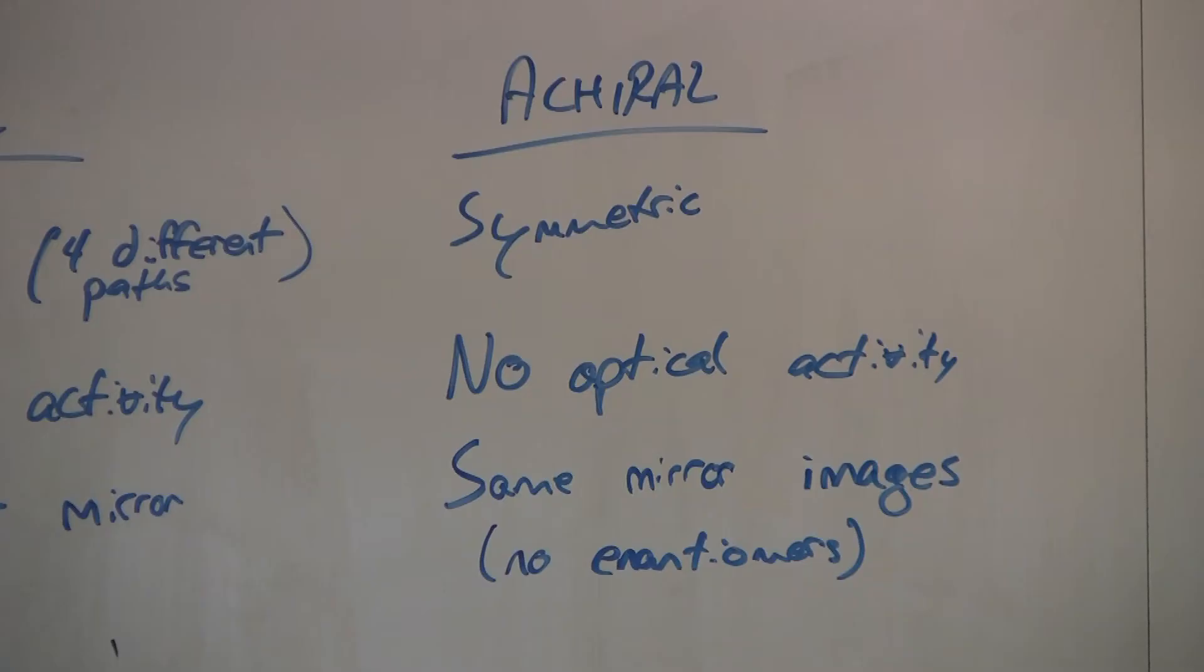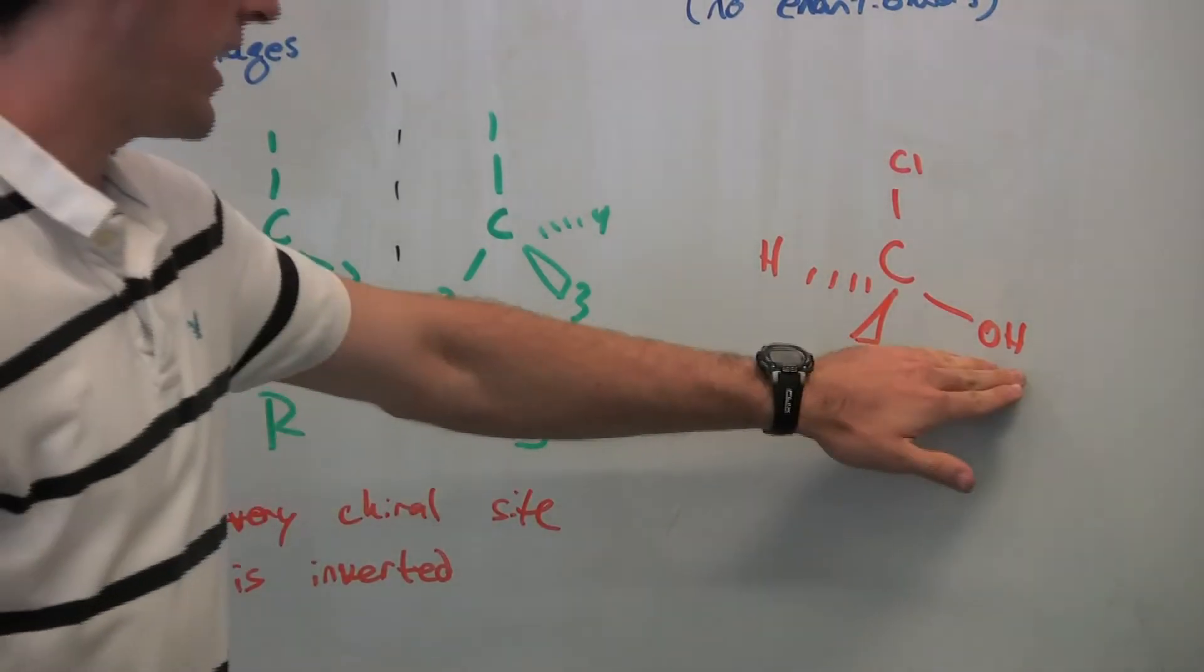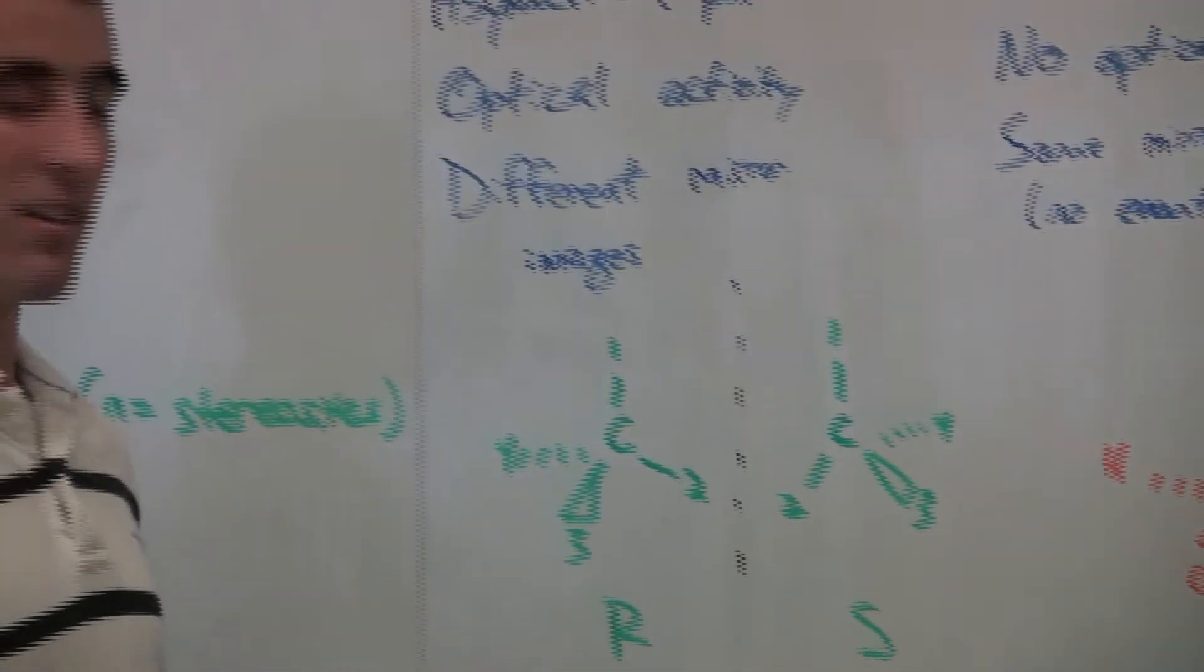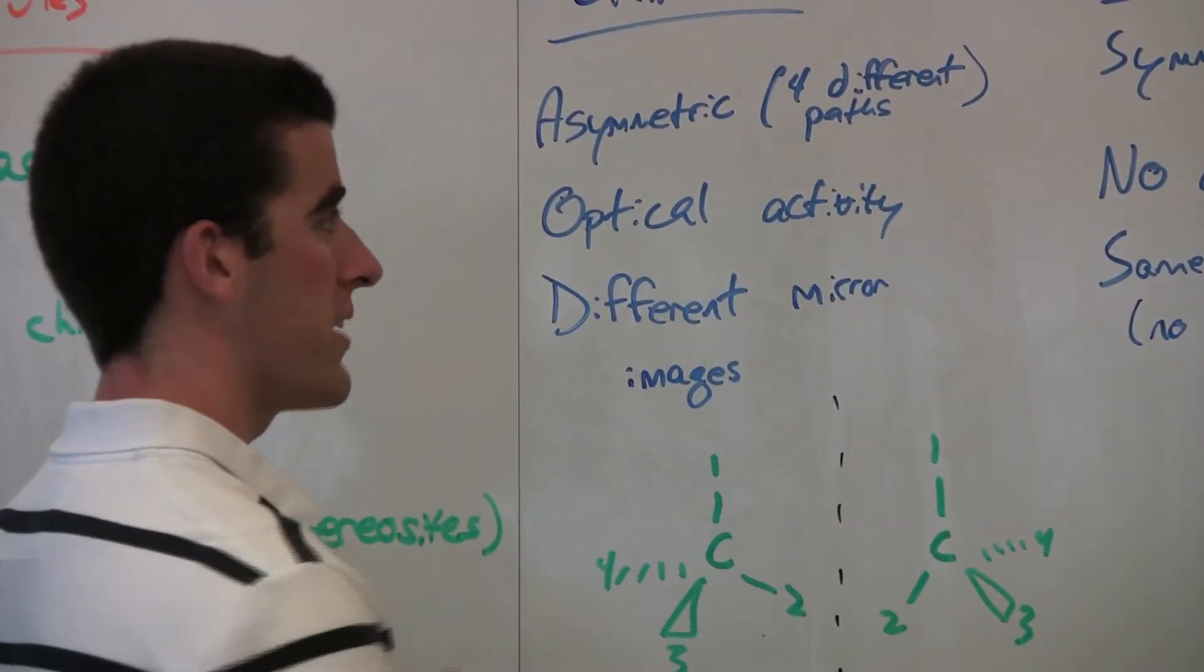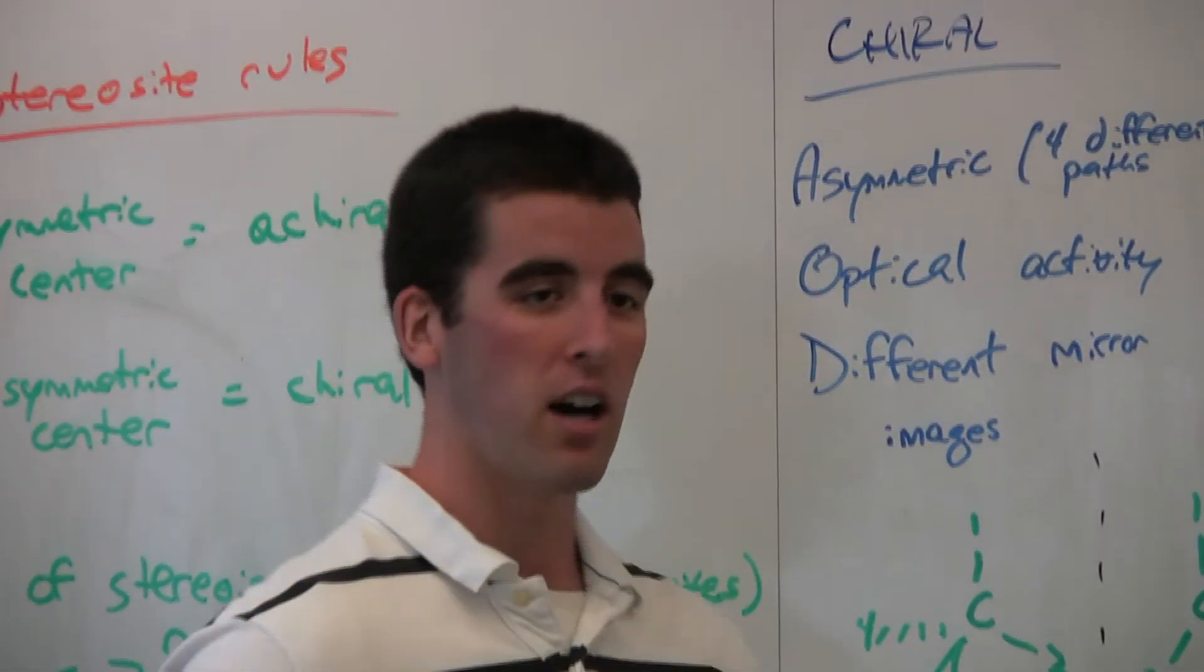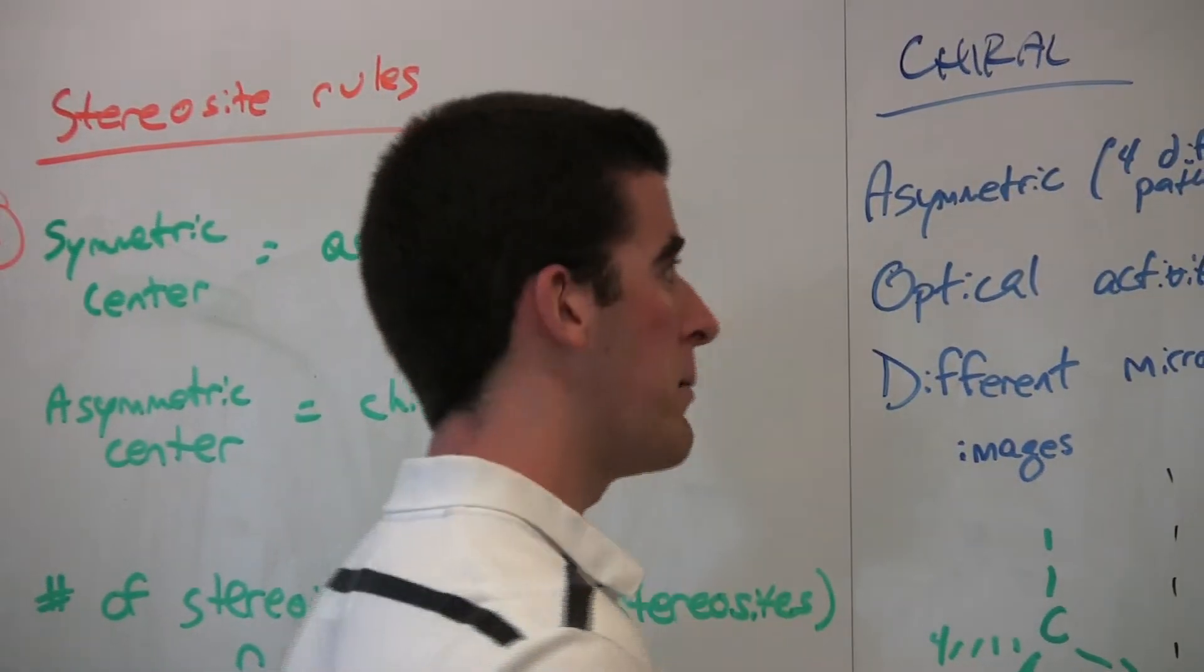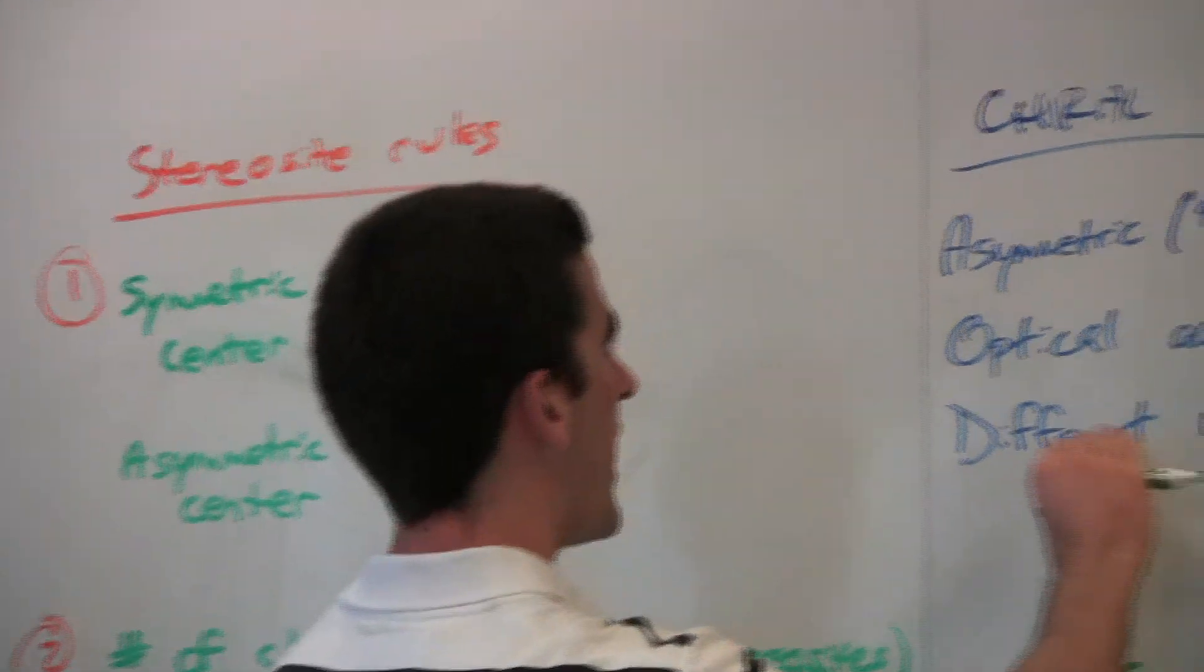With achiral sites, there is symmetry. Not all of these are four different paths. This could be an H here instead of an OH. And so there's some level of symmetry, not being four paths. And this also applies to carbon double bonds and obviously substituted rings.